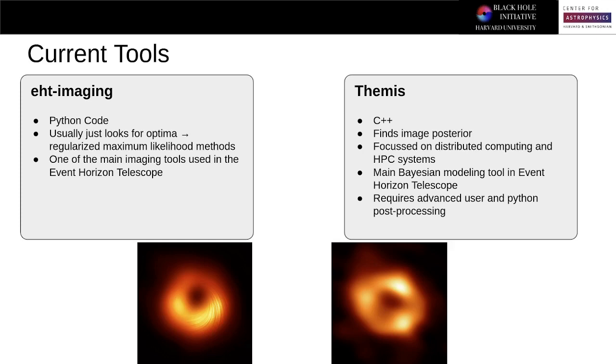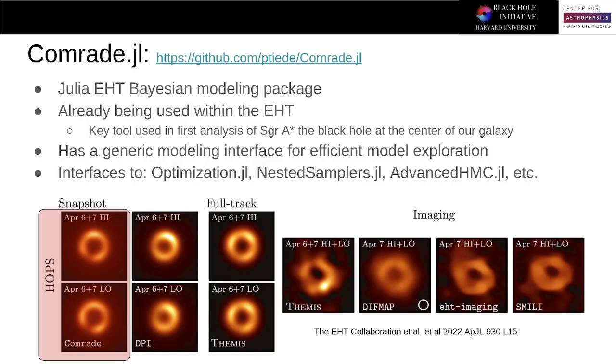In reality, this is just another example of the two-language problem in scientific computing. To try to see whether Julia can help with this problem, we developed Comrade, an EHT Bayesian modeling package. It aims to characterize not a single image, but the entire family of images.